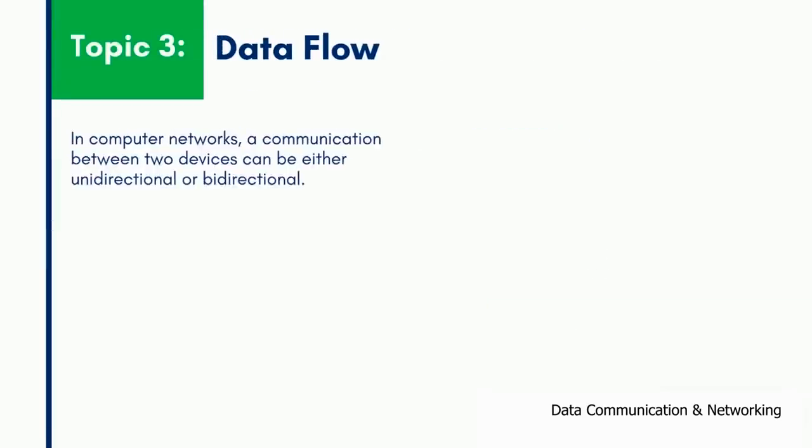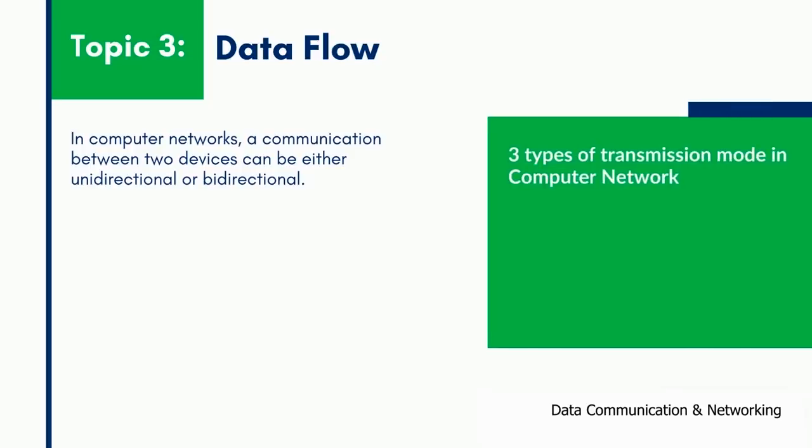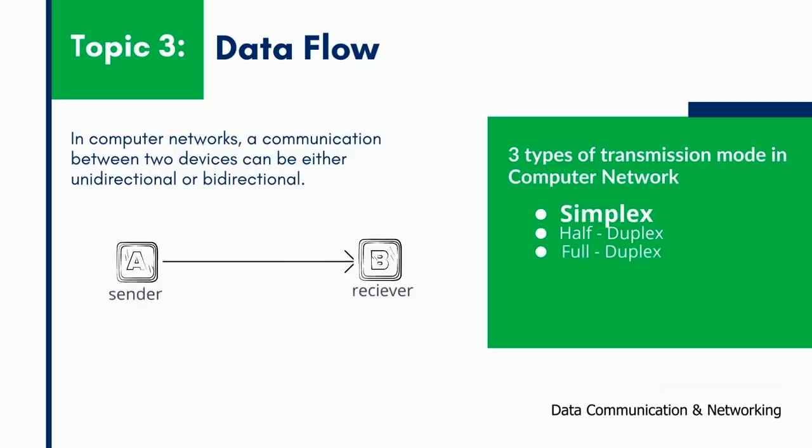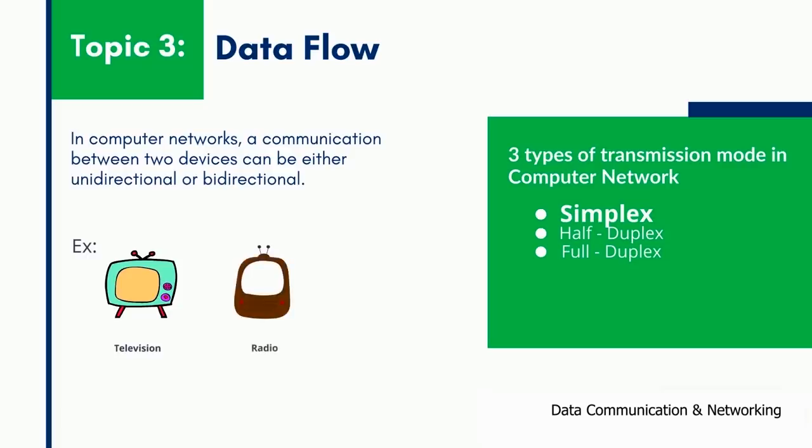Let us understand data flow. In a data communication system, there are three types of transmission mode: simplex, half duplex, and full duplex. In simplex mode, the communication is unidirectional and only one of the two devices on the link can transmit; the other can only receive. For simplex mode, we can take an example of a television, a radio, or a wireless microphone. In the case of a television, it only receives the signals to display the output.